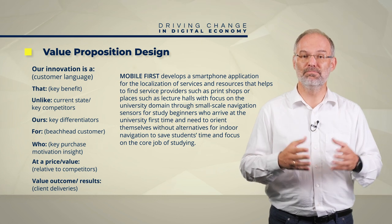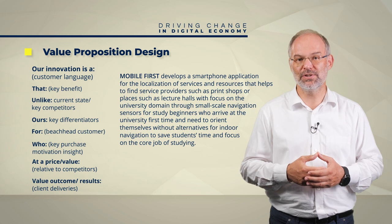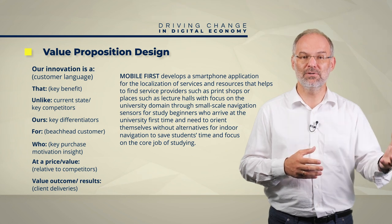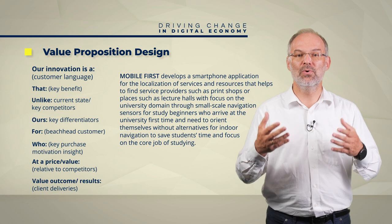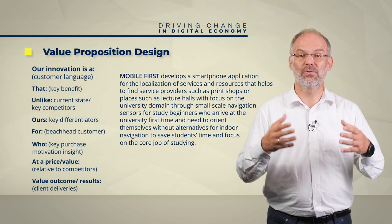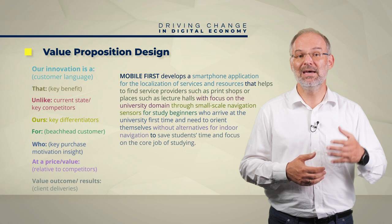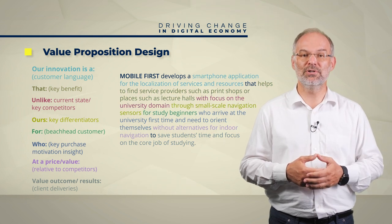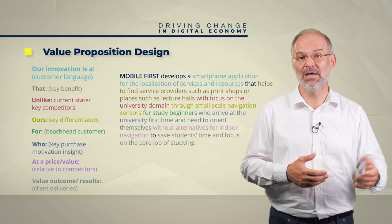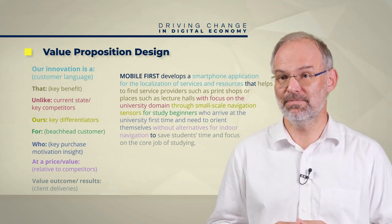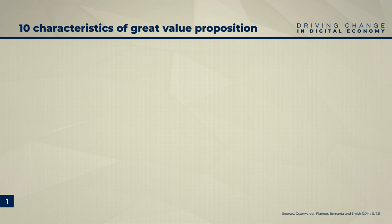Mobile First develops a smartphone application for the localization of services and resources that helps to find service providers such as a print store or places such as lecture halls, with a focus on the university domain. Using small-scale navigation sensors, it targets study beginners who arrive at university for the first time and need to orient themselves, offering indoor navigation to save students time and let them focus on studying. If you consider all these points in your value proposition, you are doing it right.